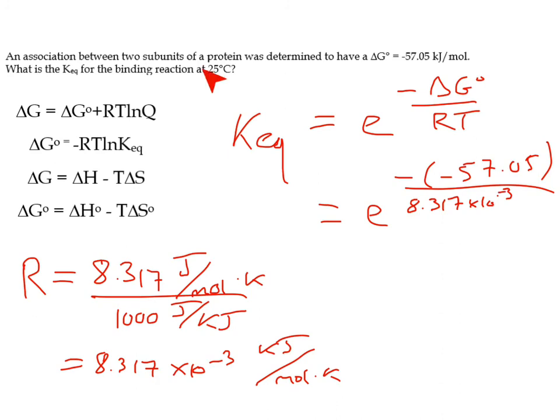So divide it by 8.317 times 10 to the negative third. And what temperature are we at? We are at 25 Celsius. And remember, degrees Celsius plus 273.15 is equal to our Kelvin temperature, which is going to be 298.15 Kelvin. So I'm going to put that in there, 298.15. So I'm going to plug that into my handy calculator here. 57.05, negative of a negative is positive, divided by 8.317 times 10 to the negative third, divided by 298.15.